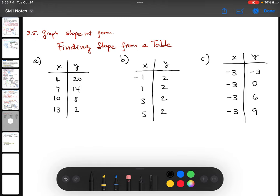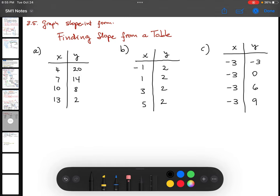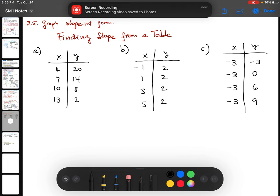How can we find the slope of a line when you don't see the graph of it from a table, for example? Well, it's not that hard, guys. Take a look at this.